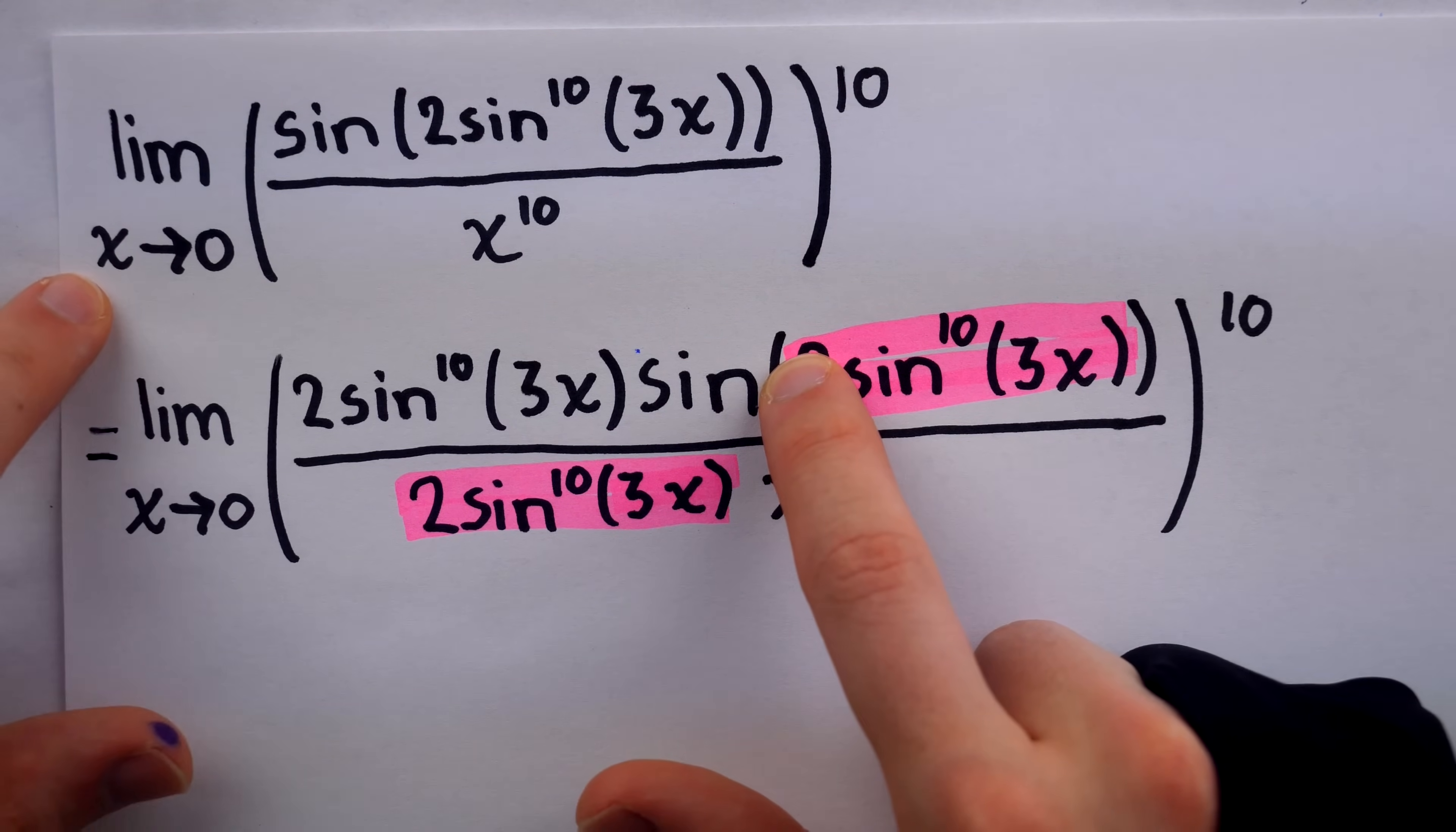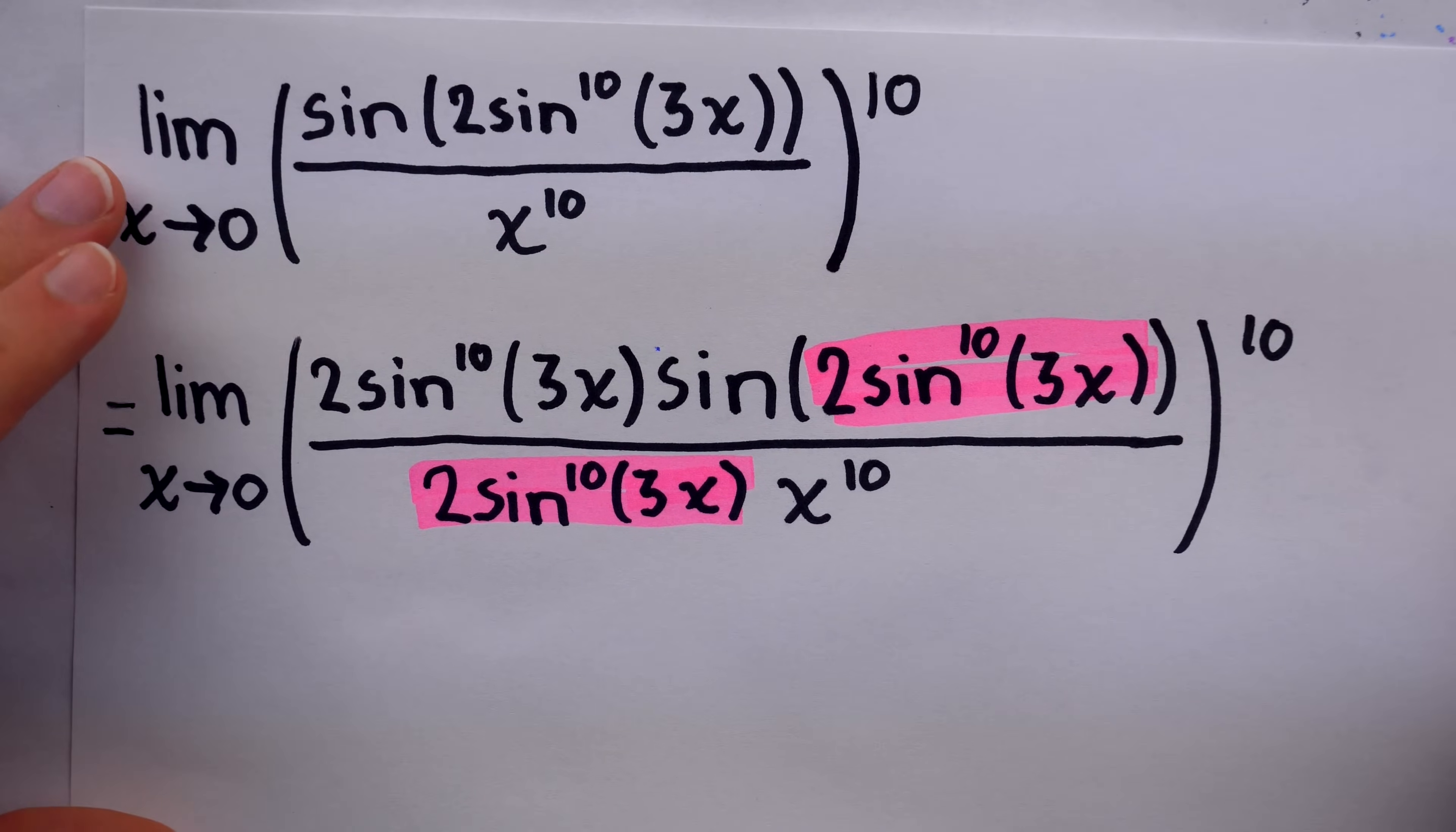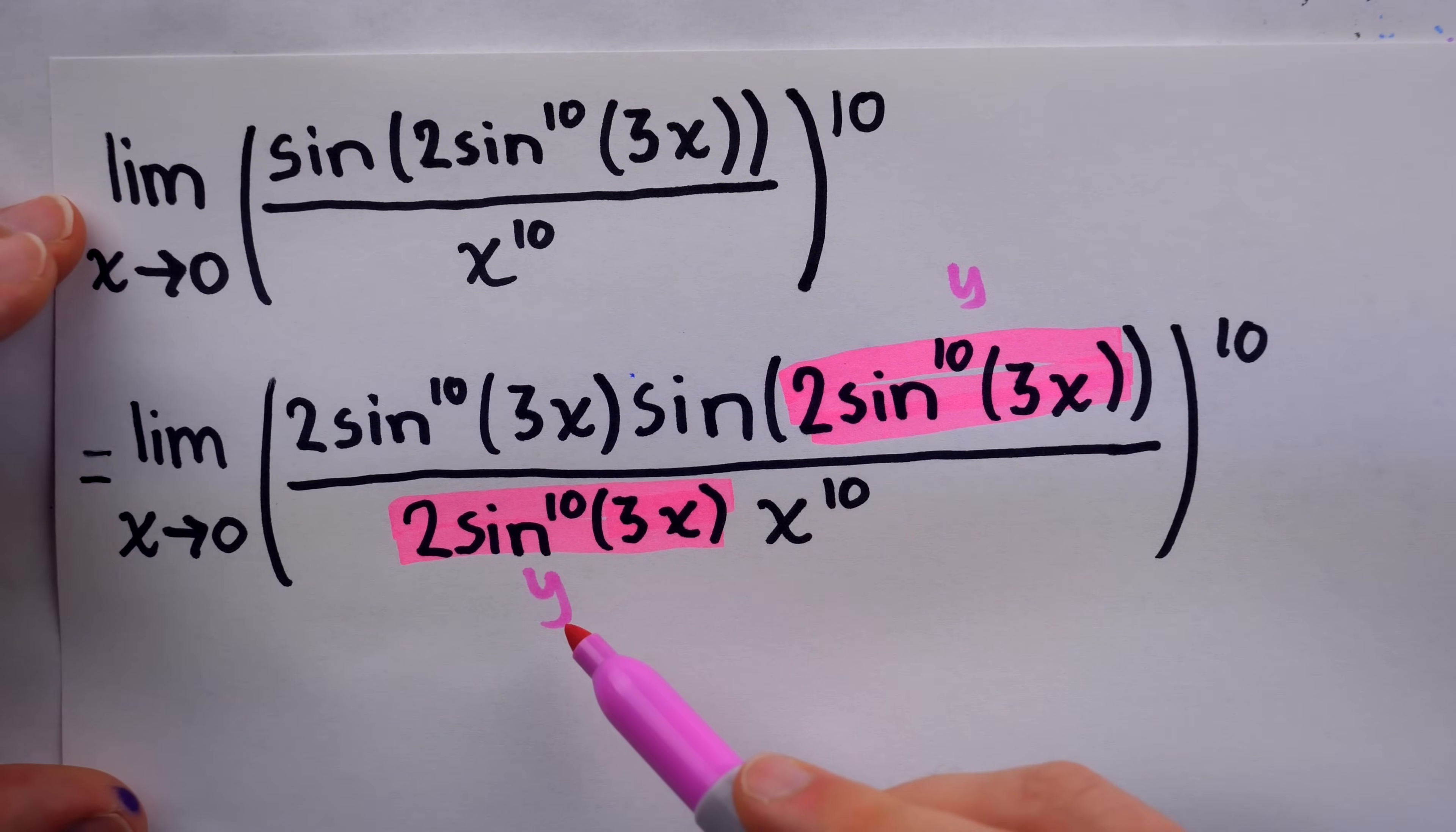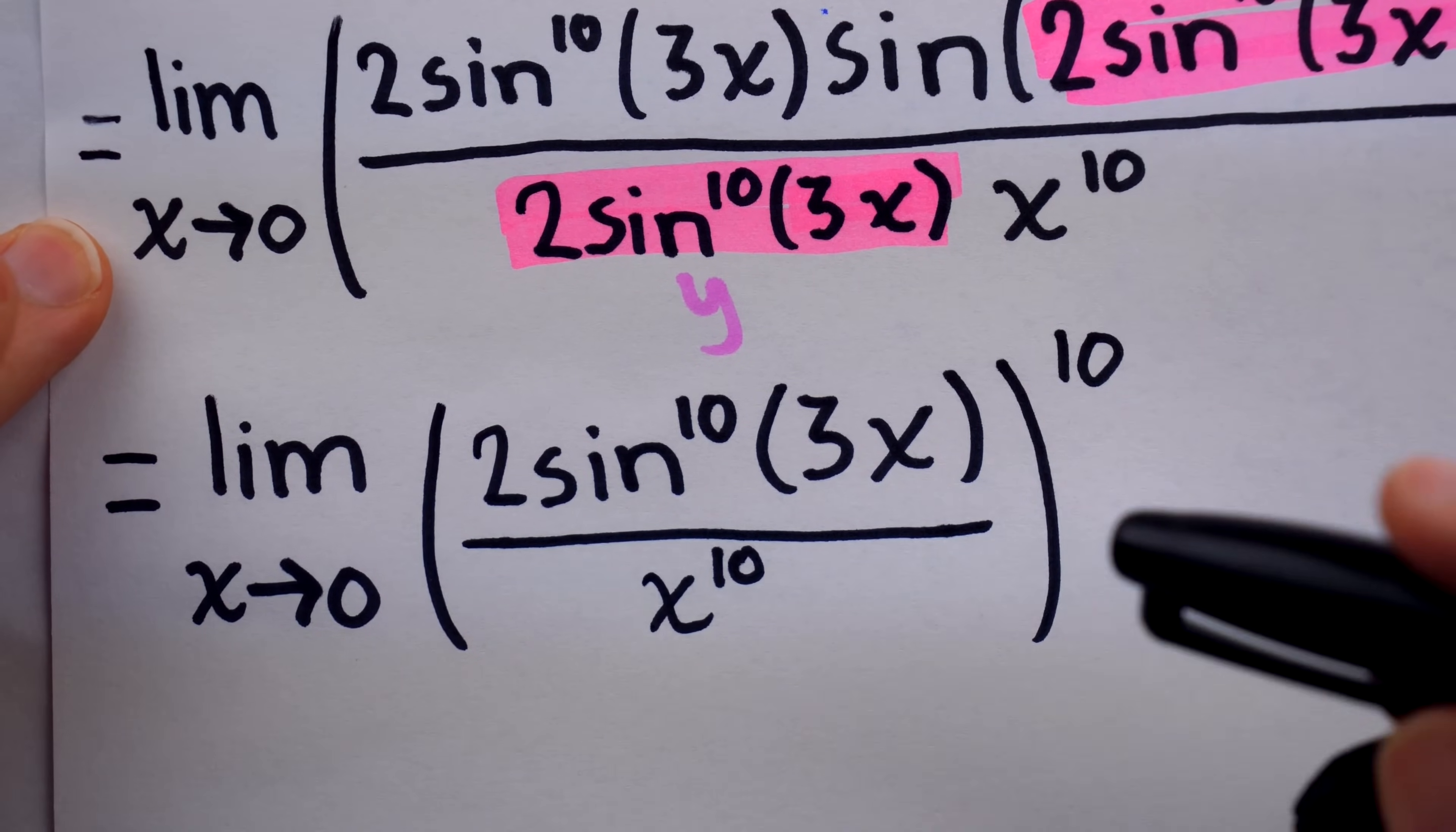And what remains is the other junk, this, and the x to the 10 in the denominator. Once more, this over this is really just this, but written differently, and so we can just replace it with 1. Oftentimes, to make this sort of thing more explicit, people will name this junk, so they might call this y, and call this y, and say, look, this is the limit of sine y over y, as y goes to 0. I'm not going to bother with all that, though. This is enough writing as it is. All right, so knowing this goes to 1, let's continue. So now, all we have left is 2 sine to the 10 of 3x over x to the 10. Of course, this whole thing is still being raised to the power of 10.